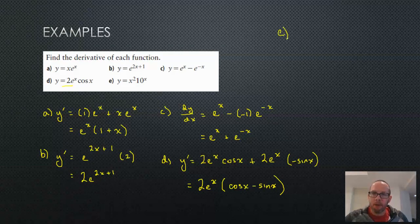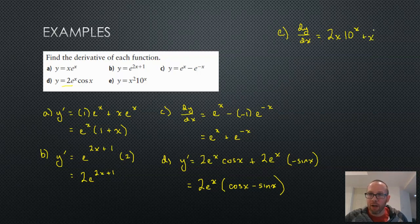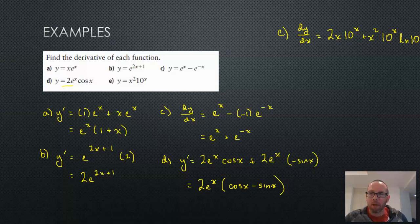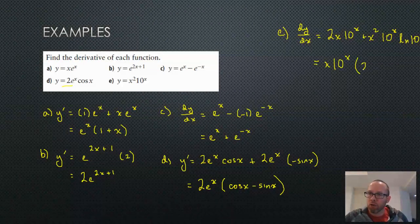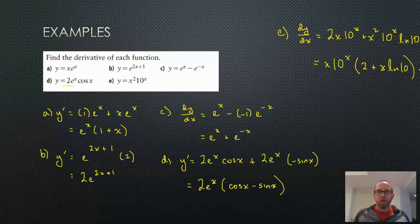For part E, another product rule: differentiate the first function, that's just 2x, times 10 to the power of x, plus leave the first function x squared. The derivative of 10 to the power of x is itself times ln of 10, since the base is 10. Each term has an x and 10 to the power of x, so factoring gives x times 10 to the power of x, leaving 2 plus x times ln 10. Factored so that we can easily set that to 0 and solve — a little warm-up mixing in all the rules you've been learning.